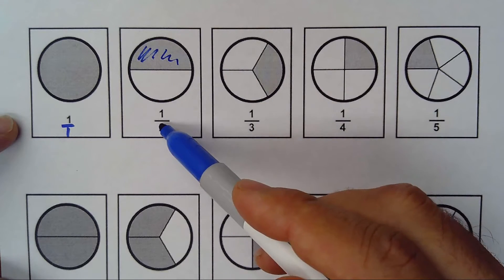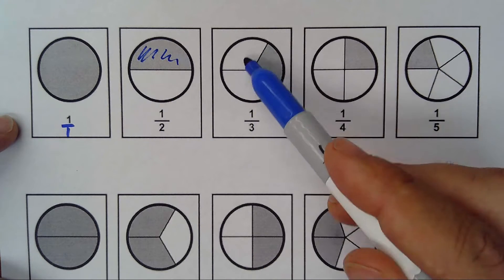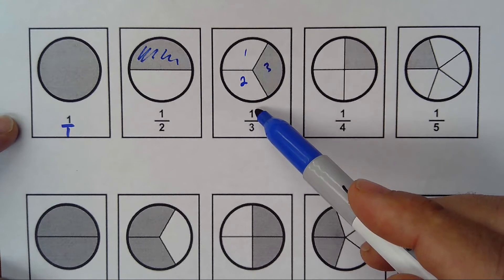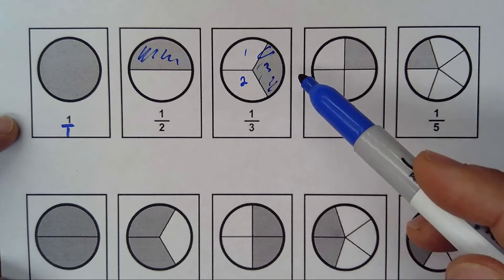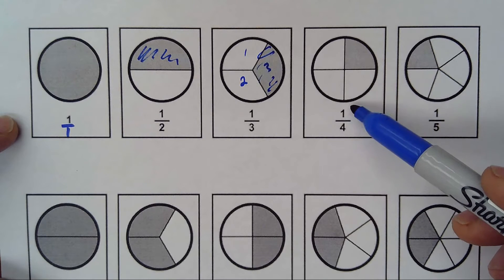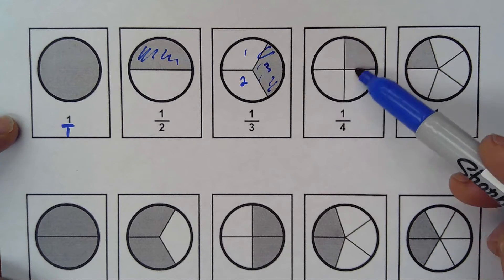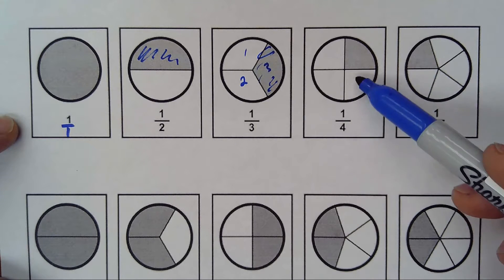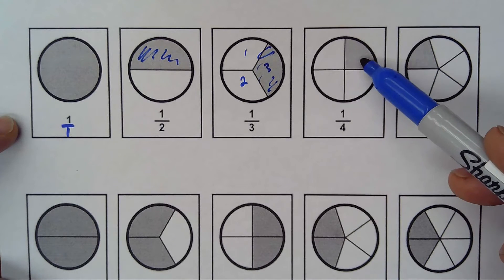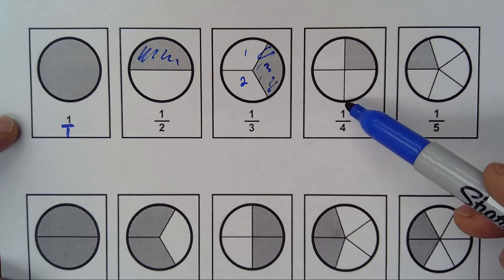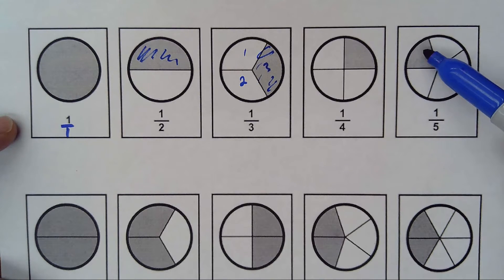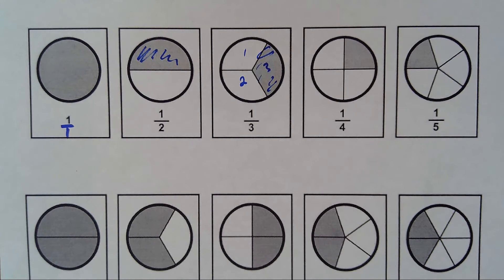From three parts I take one — that's one over three. The shaded region is the numerator; the total whole is the denominator. One out of four: I have four parts total, I shade one, so the fraction is one over four. This one is divided into five pieces, so it will be one out of five.